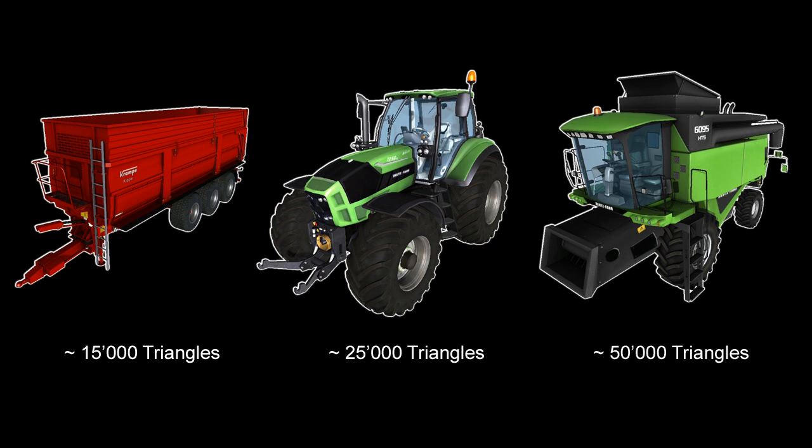In order to create beautiful and detailed models, small details such as screws, rivets, or cables must not be modeled, but should be drawn on the diffuse texture and the normal map. At the same time, the texture memory should also be respected.